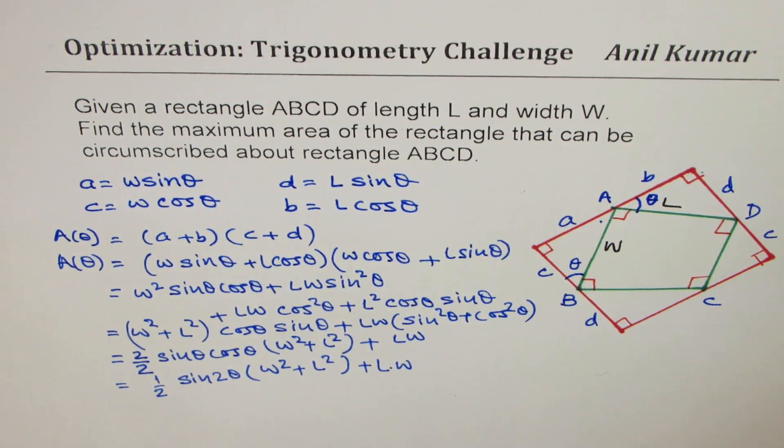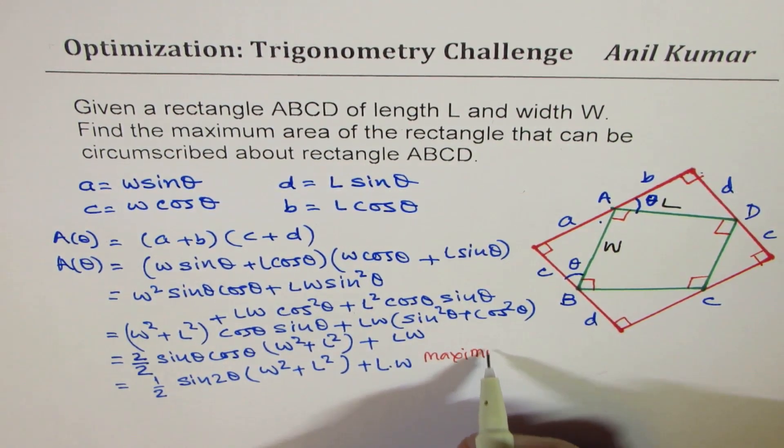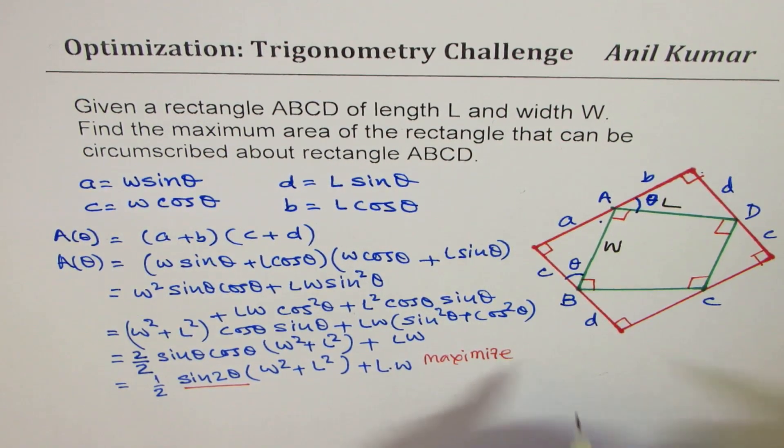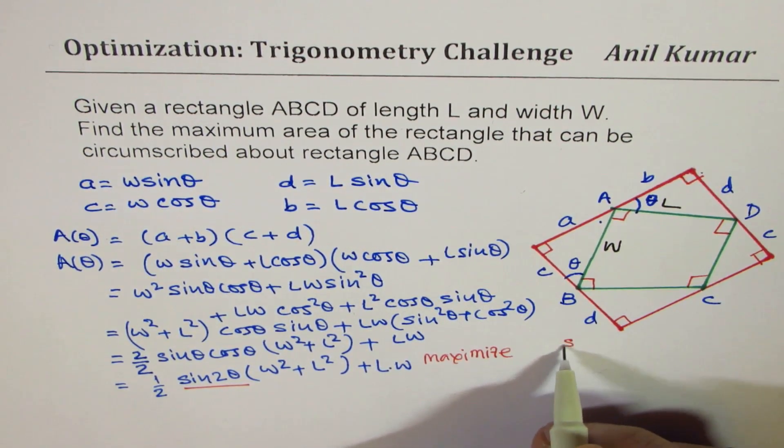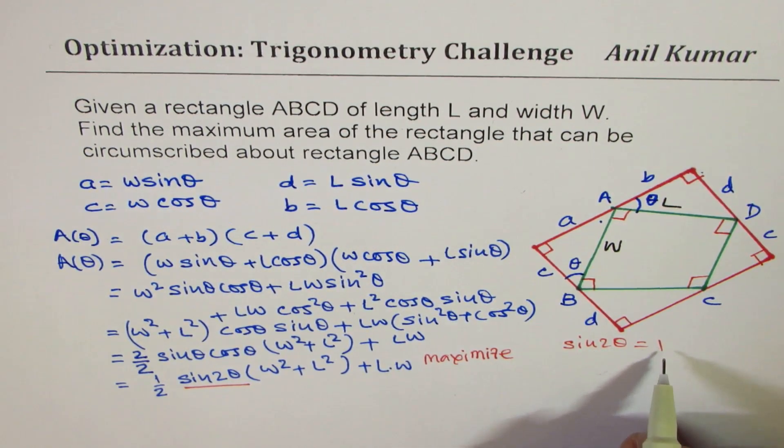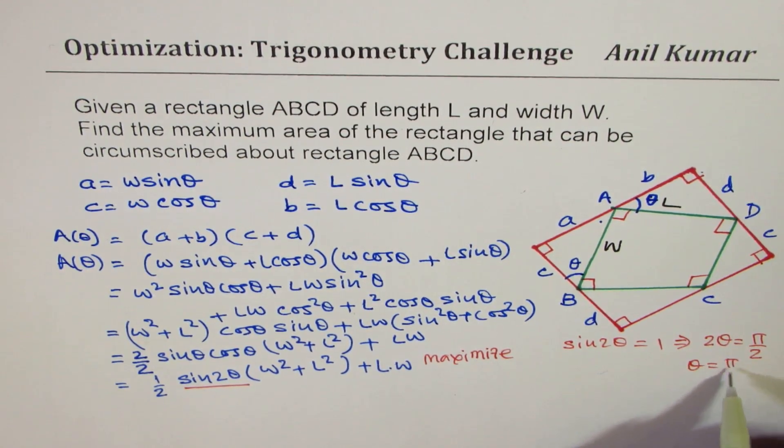Now, as far as sine 2 theta is concerned, maximum value is 1, right? For sine 2 theta, the maximum value is 1. So we can see, for maximizing, sine 2 theta should be equal to 1, that is the maximum possible value. When is that 1? Sine 2 theta is 1, that implies that 2 theta should be equal to pi by 2, or theta equals to pi by 4.